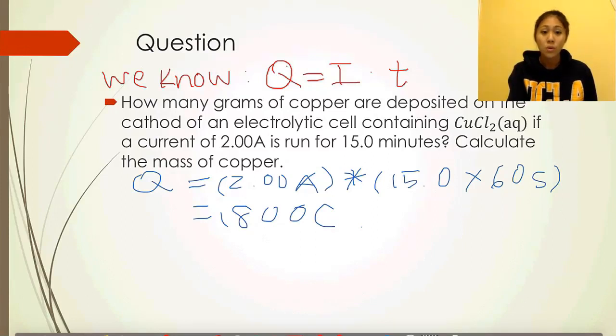Now that we have coulombs, which is the charge, we need to convert that into grams of copper. In order to do that, we're going to look at Faraday's constant. Faraday's constant describes charge on one mole of electrons. We can use this 1800 charge to figure out moles of electrons that are required in this specific electrolytic cell.